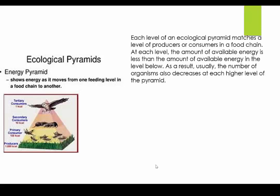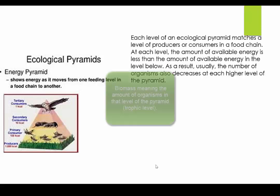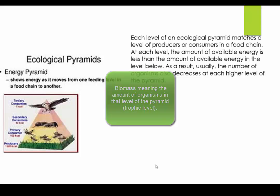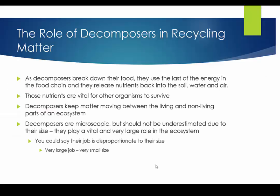Scientists use this pyramid of biomass to illustrate food energy loss. They calculate the mass at each level of the pyramid, with lower levels having significantly greater mass than the levels above. Carnivores may not eat the whole animal — when they don't, that leaves waste materials for the detritivores and decomposers.